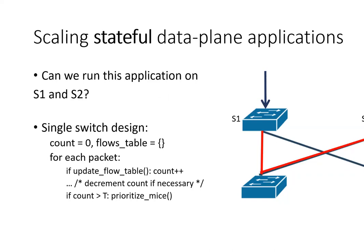Now we would like to run these applications on two switches, S1 and S2. However, we notice that it doesn't work as expected. If T/2 elephant flows travel through S1 and another T/2 elephant flows travel through S2, then there are T elephant flows in the system, yet our policy does not kick in. The reason for that is because without sharing the state between the switches, each switch has only a local view of the network.